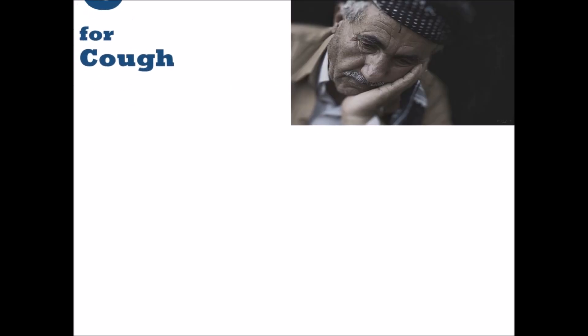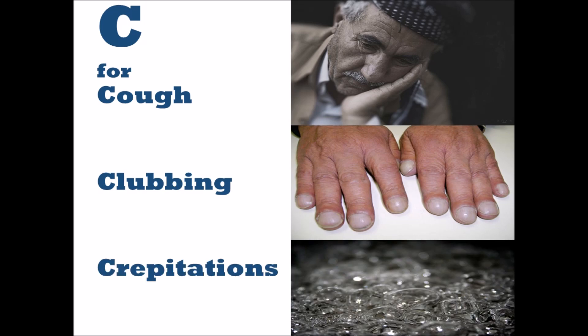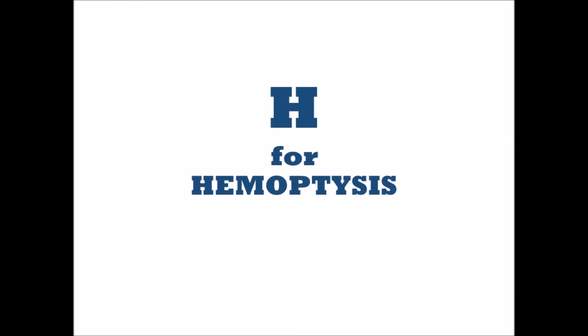C is for clinical features. Clinical features include cough, which is persistent and productive, clubbing, and crepitations. H is for hemoptysis — a complication seen in bronchiectasis which could be fatal.